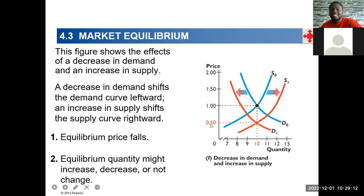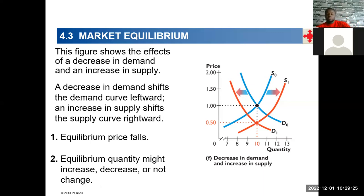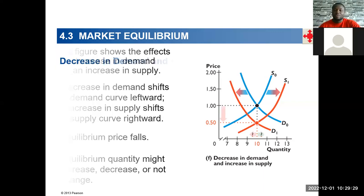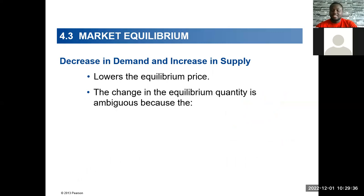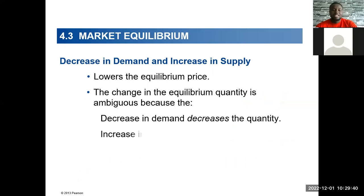When demand falls, price is supposed to fall. When supply increases, price is also supposed to fall. So price will definitely fall. What about quantity? When price falls, demand increases; when price falls, supply decreases. So we don't know whether quantity is going to increase or fall — it depends on the relative magnitudes.